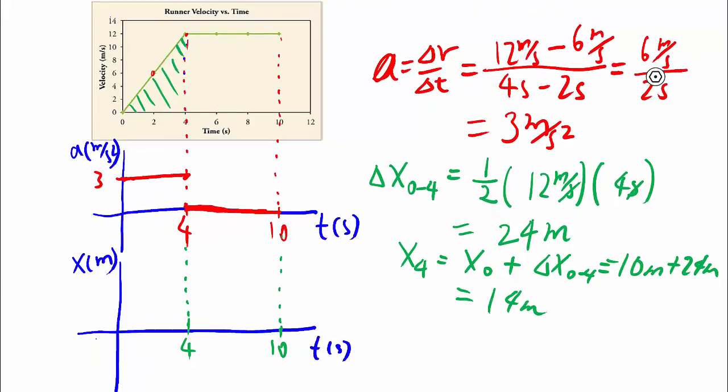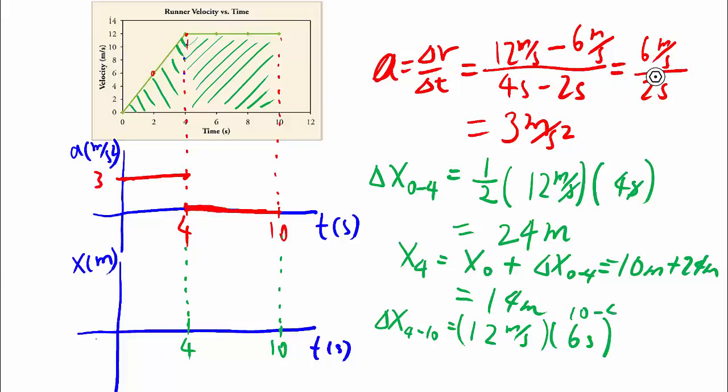Numbers aren't terribly big yet. So let's do it for the change in x from 4 to 10 seconds. Well, there, the area we're talking about is this area between 4 and 10 seconds. And that's a rectangle because velocity is constant. So that's just length times width. And this time is, of course, 10 minus 4. Not 10, not 4, but the change in time. So there you go, 6 seconds, giving us 72 meters. It's pretty big.